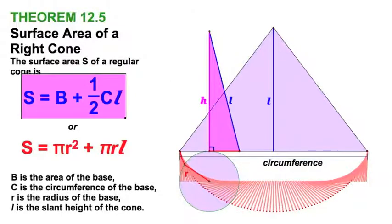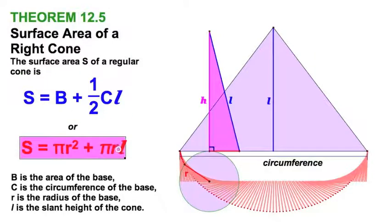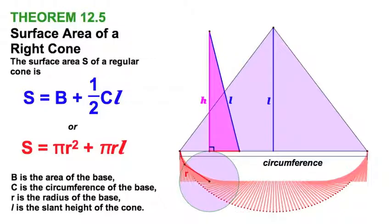Looking at the blue formula: area of the base plus one-half circumference times slant height. Over here I'm going to substitute the red form, which I find far more useful. Pi r squared is the area of a circle. If I substitute 2πr for the circumference, the 2 divides out with the one-half and it simplifies to πrL. So the first term is the base and the second term is the lateral area.